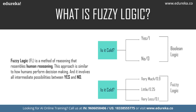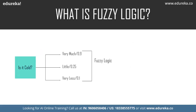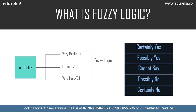This is the key difference between Boolean logic and fuzzy logic: in Boolean we only use zero and one, yes and no, but in fuzzy logic we have intermediate values between yes and no. The conventional logic block takes precise input and produces a definite output of true or false, equivalent to a human's yes or no. Fuzzy logic was invented by Lotfi Zadeh, who observed that unlike computers, humans have a different range of possibilities — certainly yes, possibly yes, cannot say, possibly no, or certainly no.